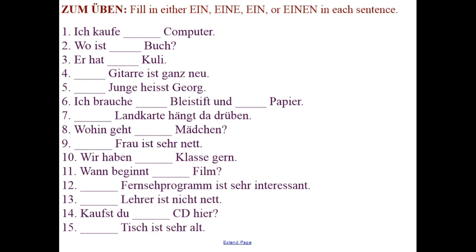Let's see how you did. Number 1: 'Ich kaufe einen Computer' — I buy a computer. The direct object — ein would be einen. Number 2: 'Wo ist ein Buch?' — Where is a book? Number 3: 'Er hat einen Kuli' — He has a pen.